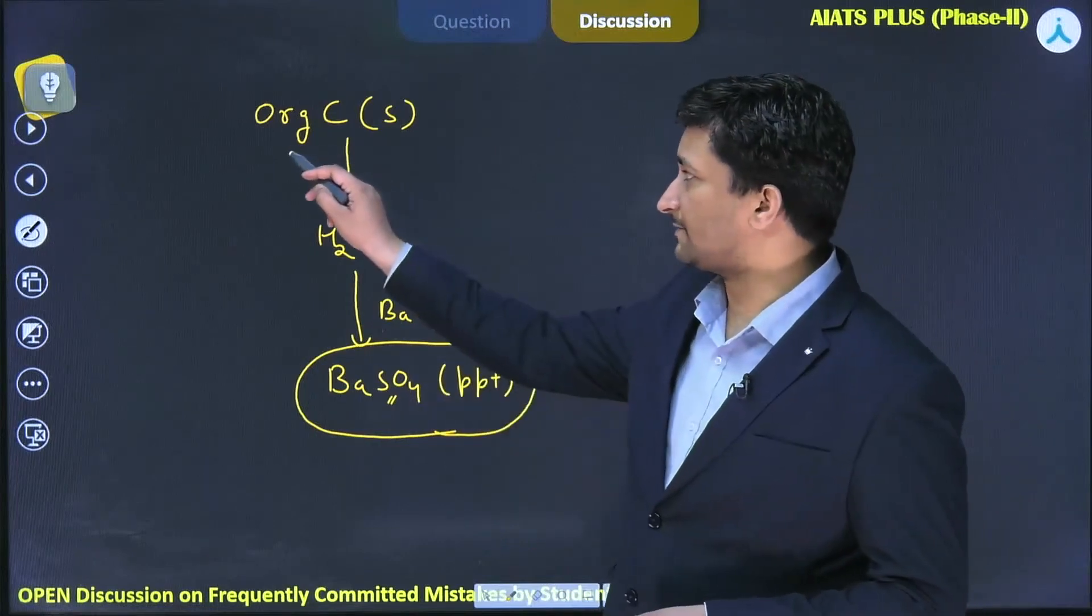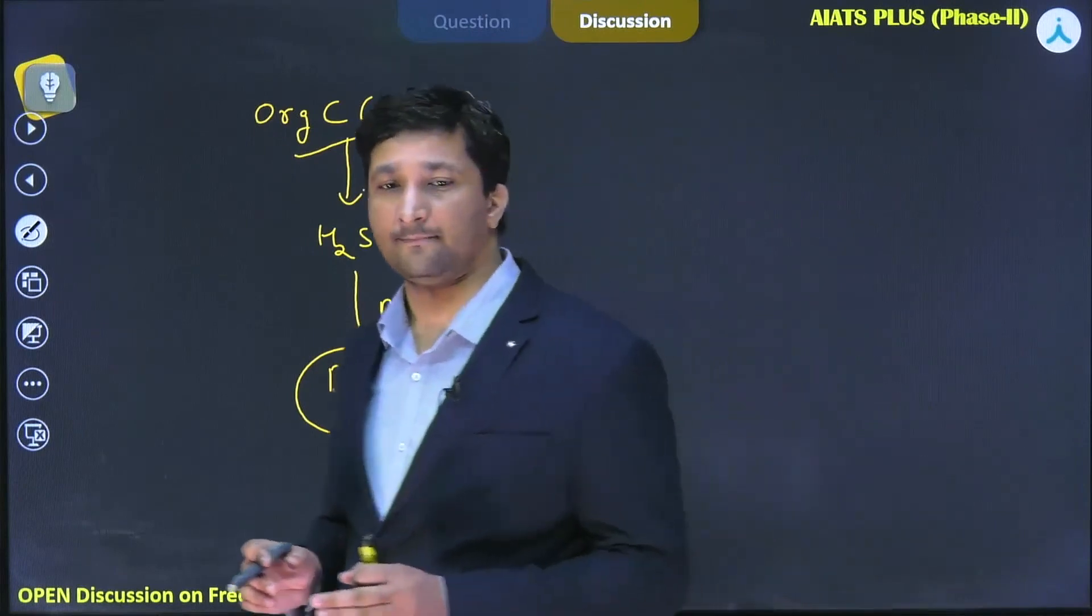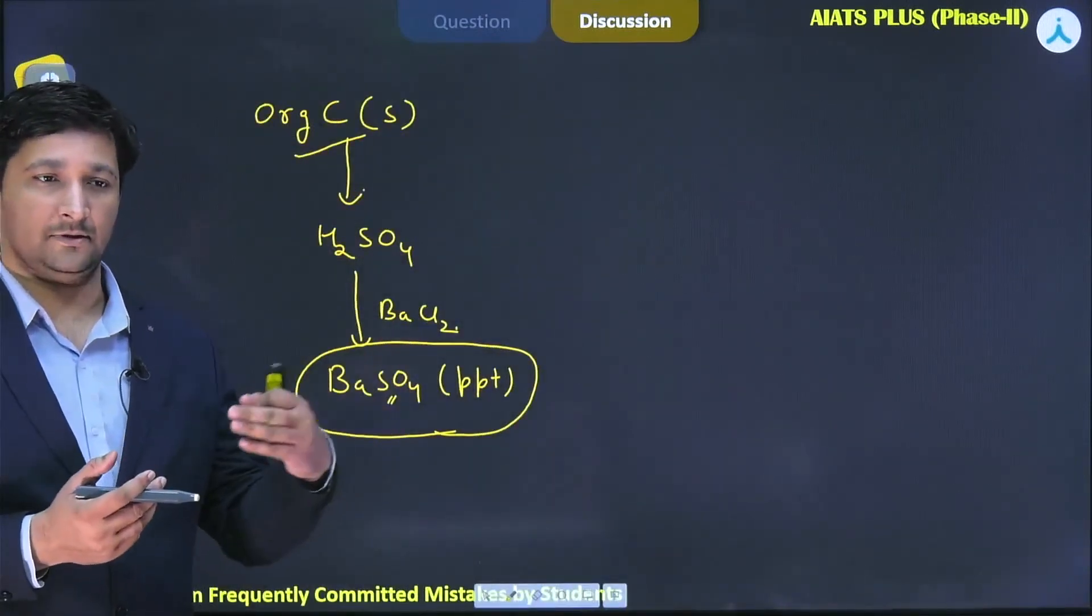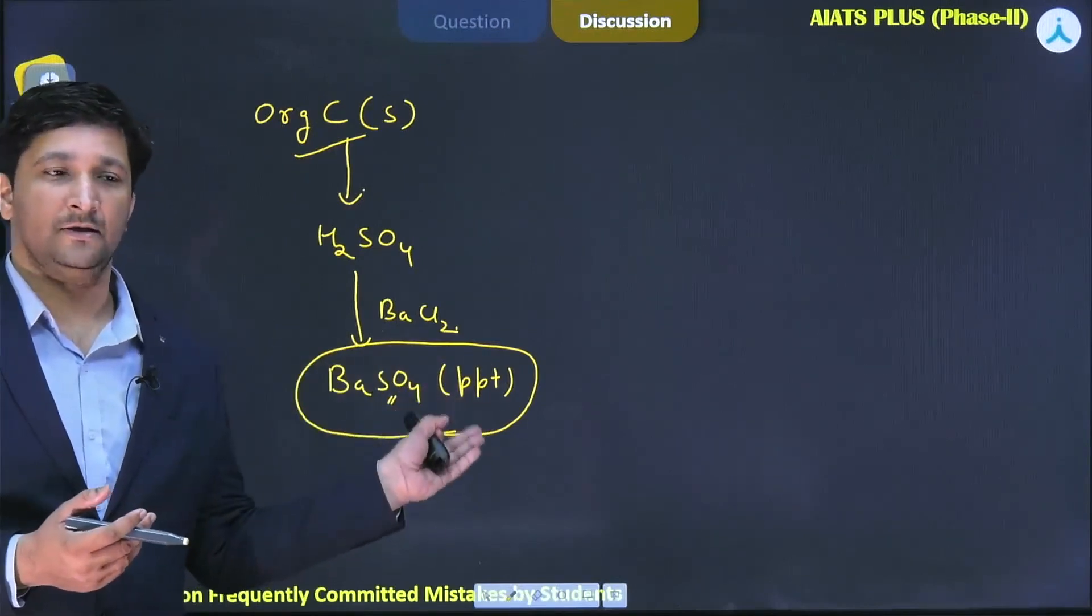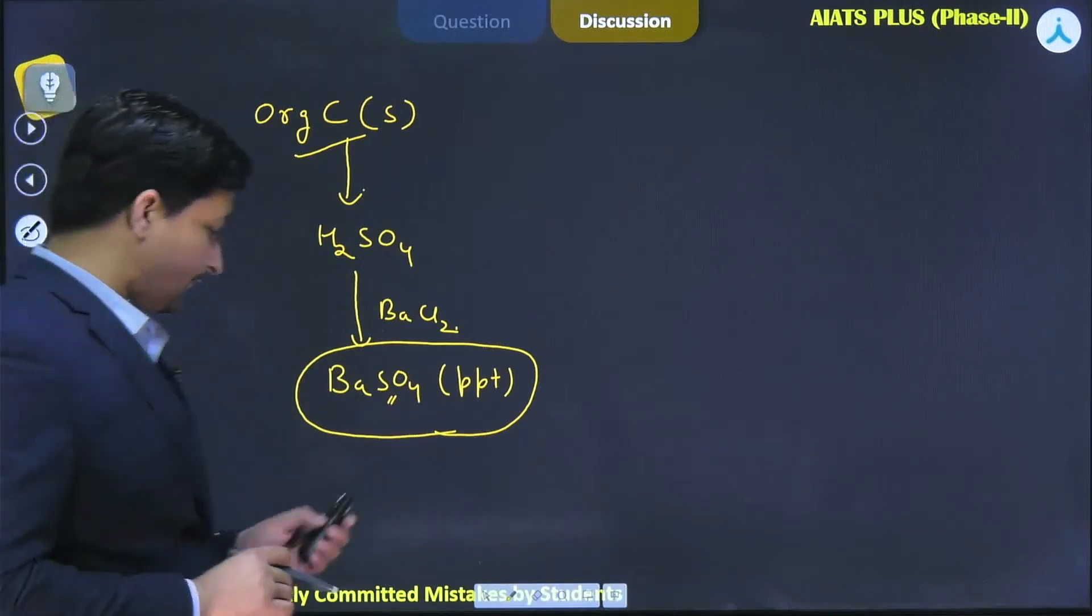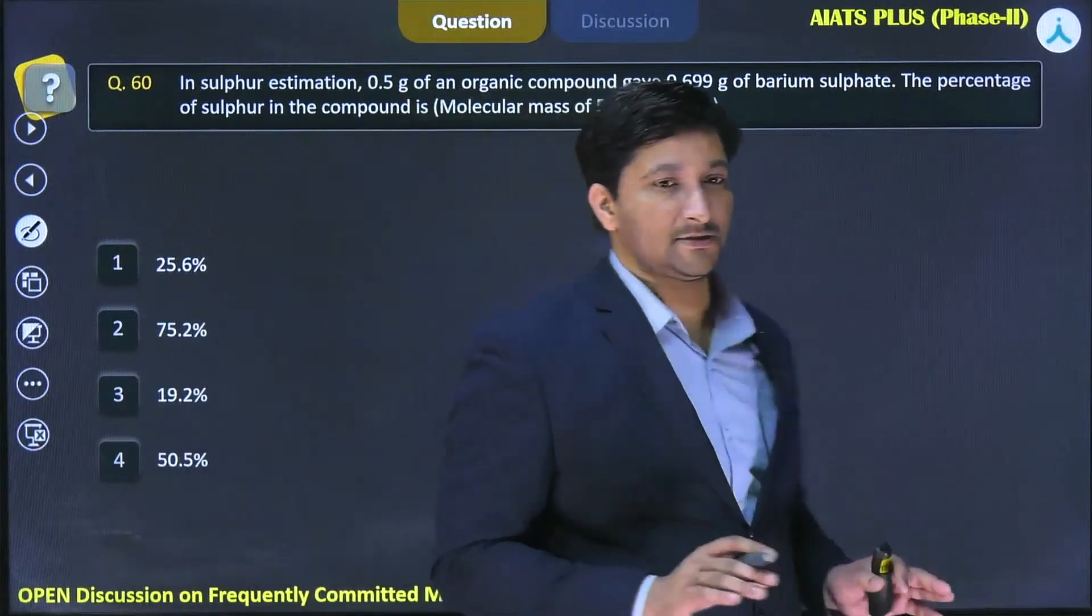If we know the mass of that organic compound, we can divide the mass of sulfur by the mass of the organic compound and multiply by 100 to get the percentage composition. A very important thing to keep in mind is that in such questions related to Carius tube method, you have to follow the unitary method.